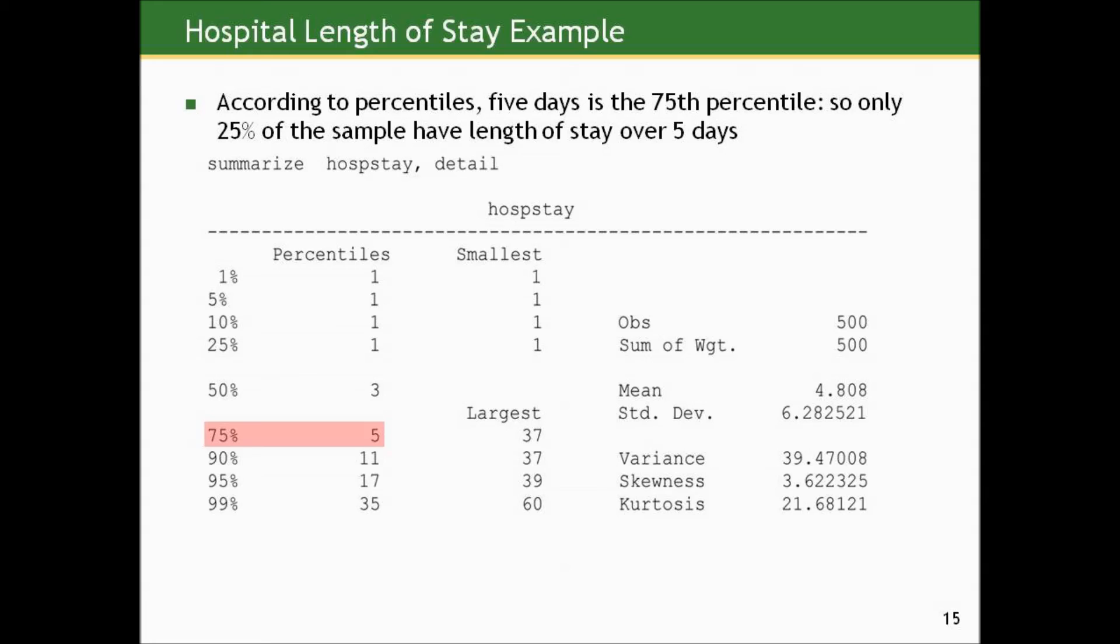However, if we go and look at the percentiles, 5 days is the 75th percentile of the data. I'm just looking at the results from that summarize command again. 5 days is the 75th percentile. So only 25% in our sample have a length of stay over 5 days. So we would grossly overestimate that if we applied the results that are useful for normal curves to non-normal data in this case.